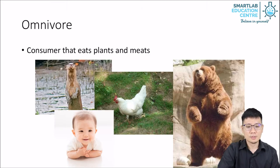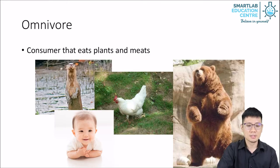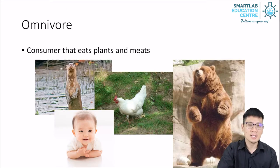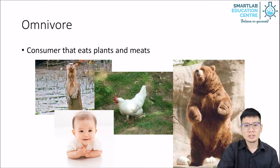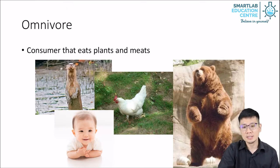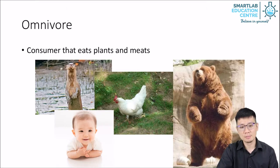And then we have omnivores. Omnivores are animals that eat both plants and meats as part of their steady diet — more versatile in that respect.